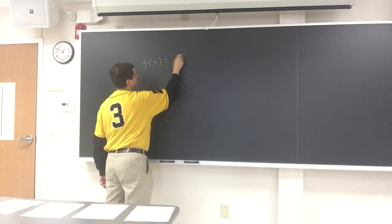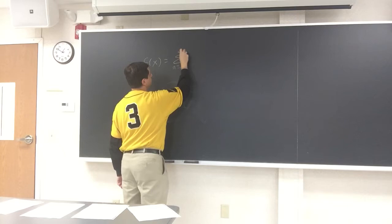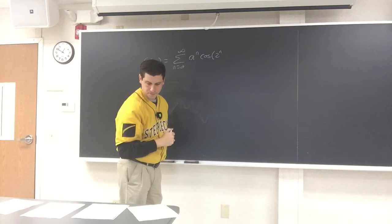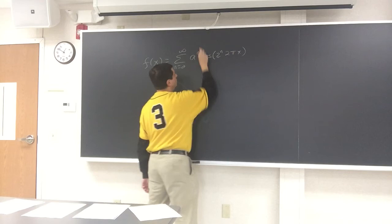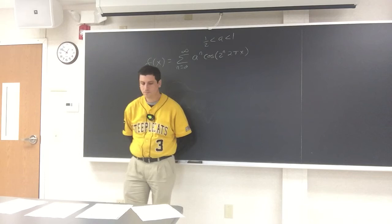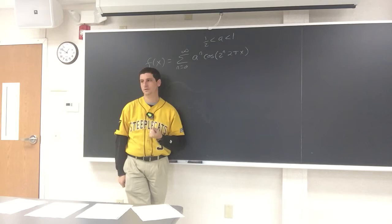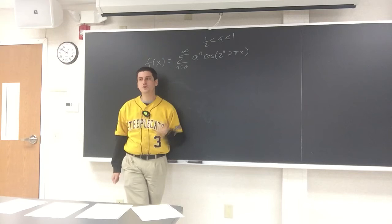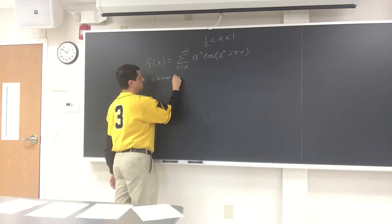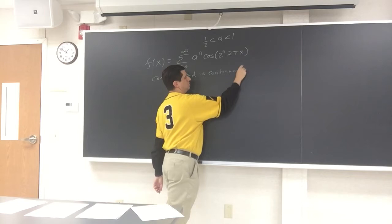We're going to let f(x) be the sum, n goes from 0 to infinity, of a^n times cosine(2^n · 2πx), with 1/2 strictly less than a strictly less than 1. The first question is: does this series converge at each point x? Well, cosine is always between -1 and 1, and we have a geometric series here, so it converges at every point. So it converges and is continuous.